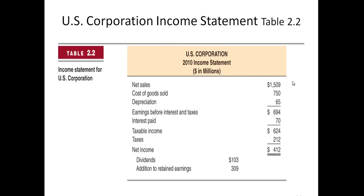You have a certain amount of net sales — you're selling your goods and getting money for it. Sometimes on income statements you'll see it say net revenues — same thing. Then cost of goods sold: what are the raw materials, what does that stuff cost to produce? You subtract out depreciation and we get earnings before interest and taxes.